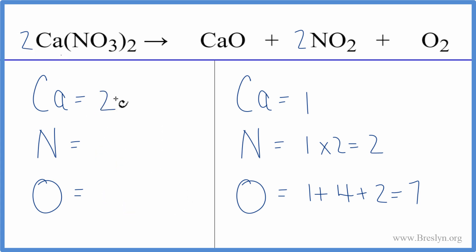So I have one times two, two calcium atoms, two times the one, the two nitrogens, times the two. So two times two is four. Two times the three is six, times the two. Now I have twelve oxygen atoms.